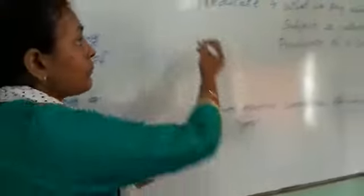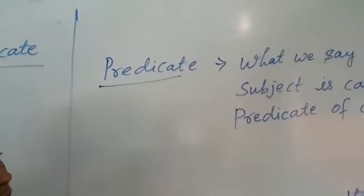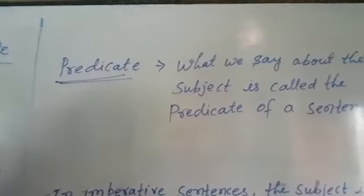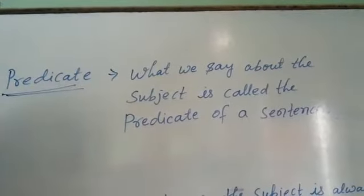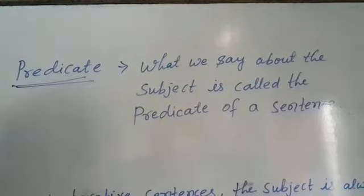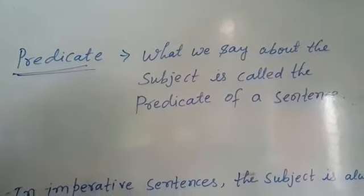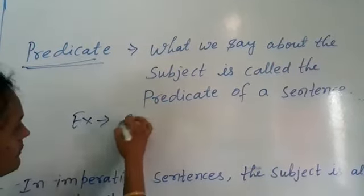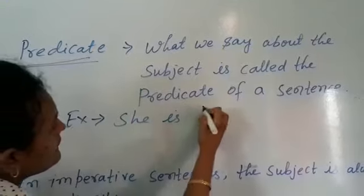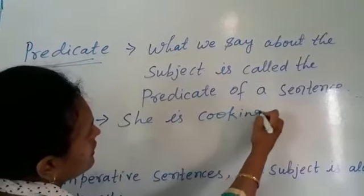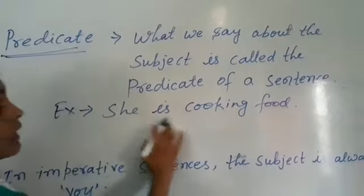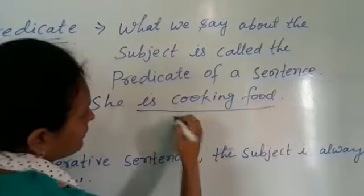The second part is predicate. What is said about the subject in a sentence is called the predicate. It means the words that describe the action done by the subject are called the predicate. Example: 'She is cooking food.' So 'is cooking food' is the predicate.